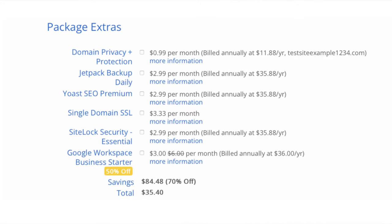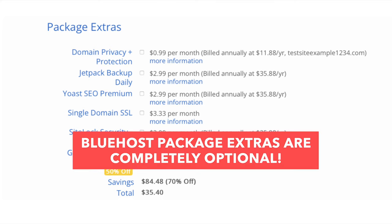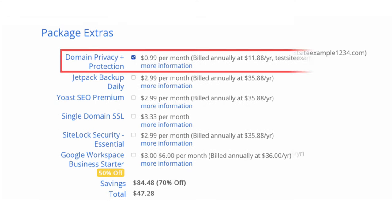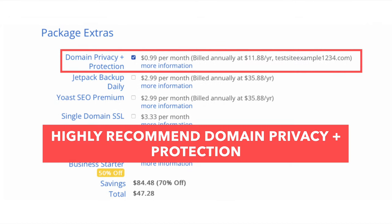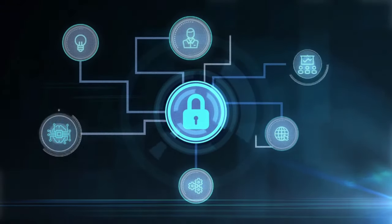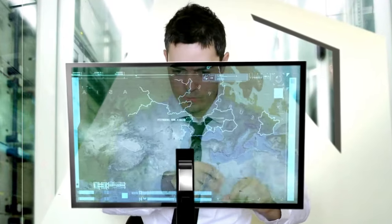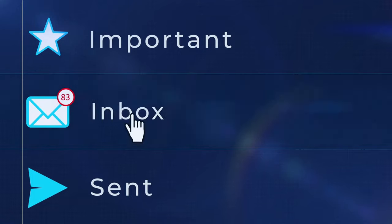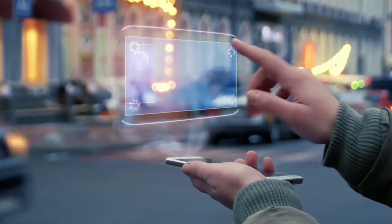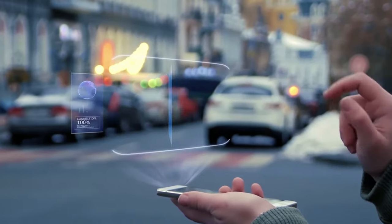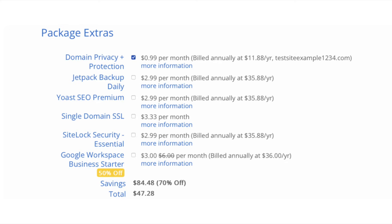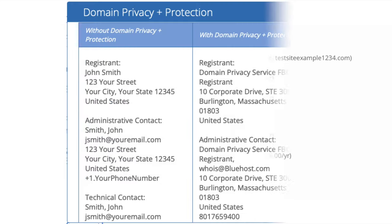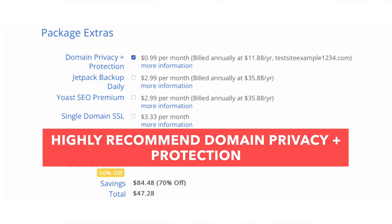Next is the Bluehost package extras section. These are completely optional. First is Domain Privacy Plus Protection — I do recommend this, as it keeps your personal information private so spammers and telemarketers won't have access to your phone and email. When you register a domain name, it goes into the public Whois database. With domain privacy plus protection, it'll show Bluehost's default contact information instead of yours. Highly recommended.